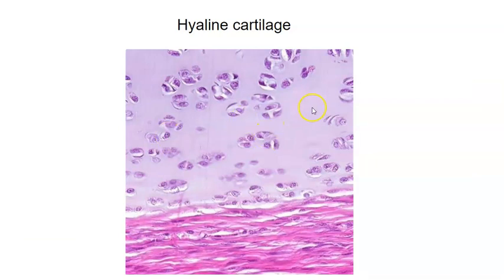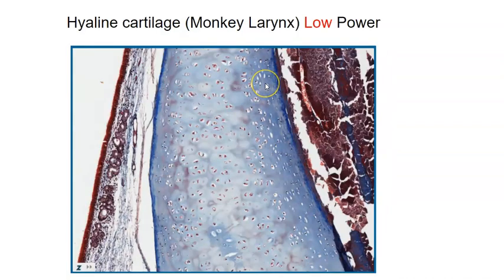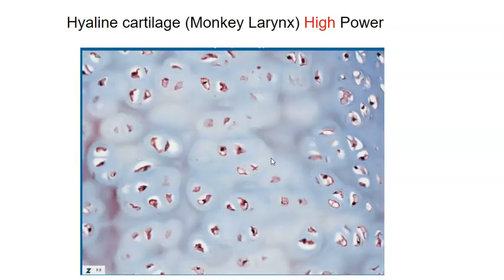Here we can see the chondrocytes sitting in lacunae. The extracellular matrix is glassy, confirming it's hyaline cartilage. This is the nasal septum — notice the part labeled hyaline cartilage where we can see the lacunae and chondrocytes clearly, with a glassy matrix. Here's hyaline cartilage from a monkey larynx under low power and then under high power — no fibers are visible, but the chondrocytes are very clear.